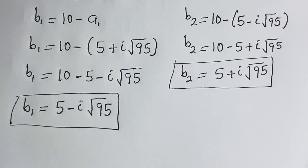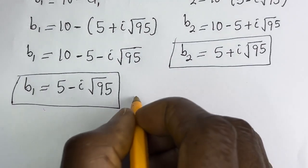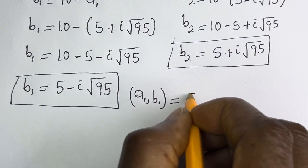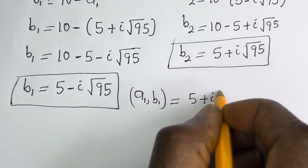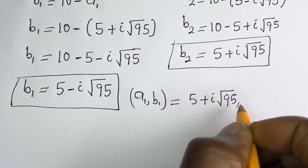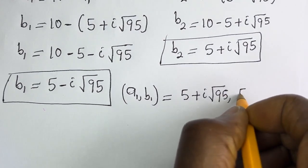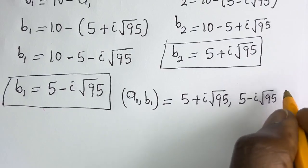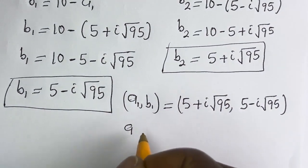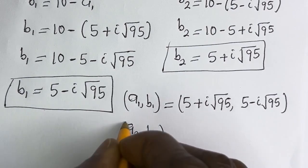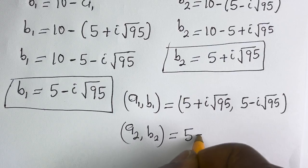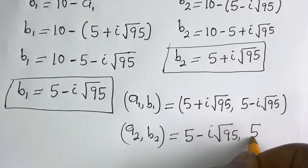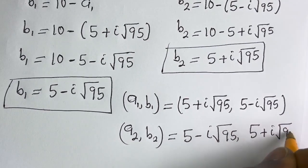This is the value of B2: B2 is equal to 10 minus A2, which is 5 minus i square root of 95. So B2 is equal to 10 minus 5 plus i square root of 95, giving B2 is equal to 5 plus i square root of 95. Therefore our final answers are: A1, B1 equals (5 plus i√95, 5 minus i√95) and A2, B2 equals (5 minus i√95, 5 plus i√95).